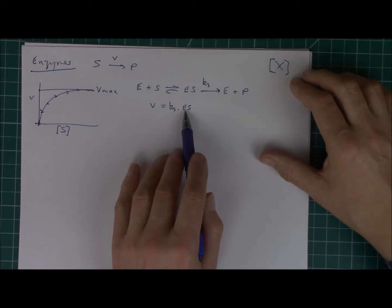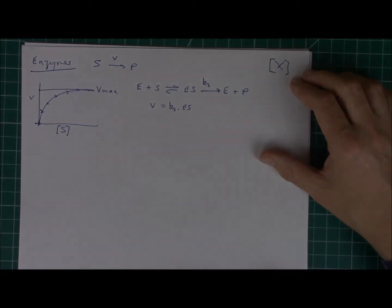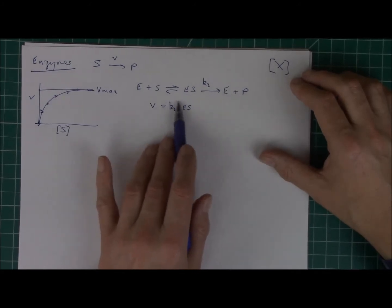In other words, if I double ES, I double the rate. If I halve ES, I halve the rate. And this is related via this proportionality constant, or this rate constant, K3.